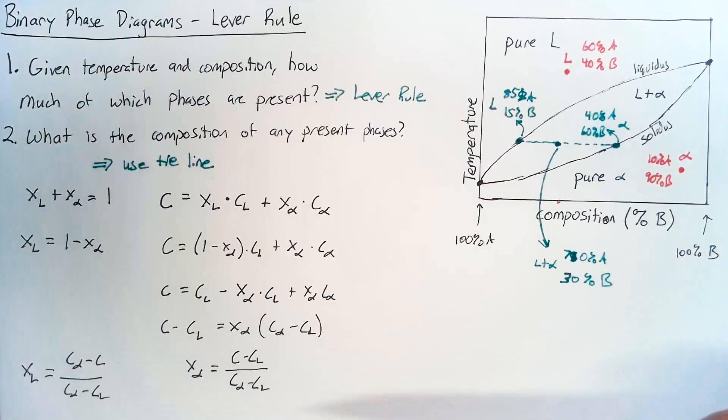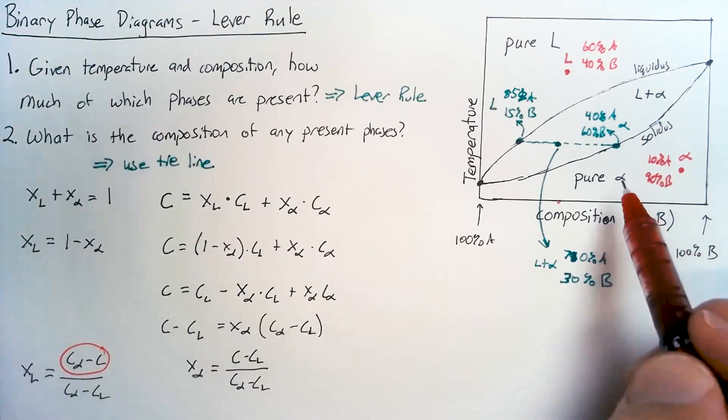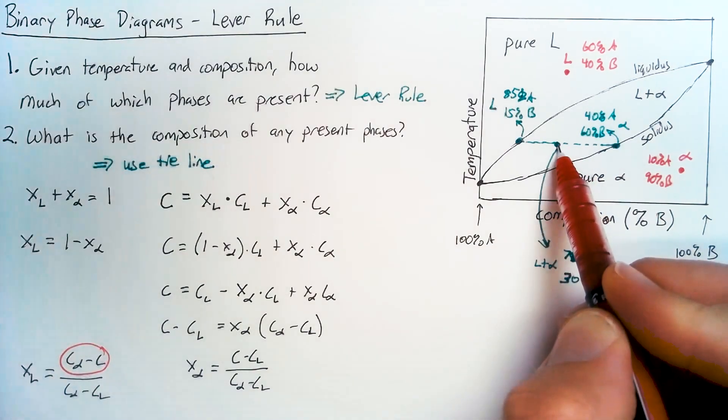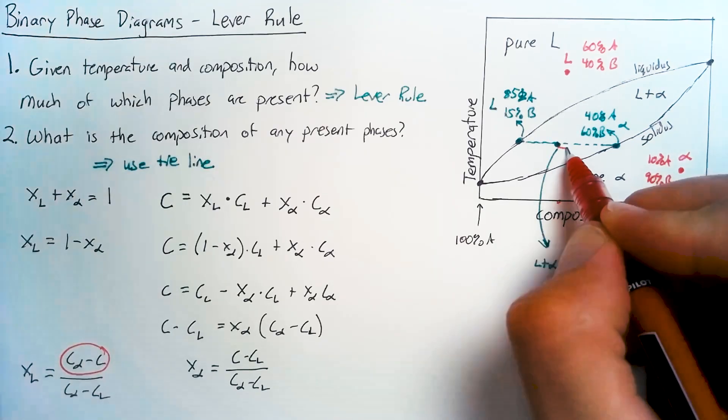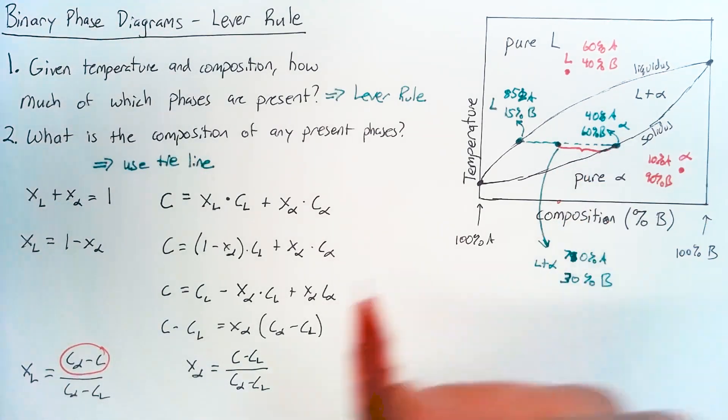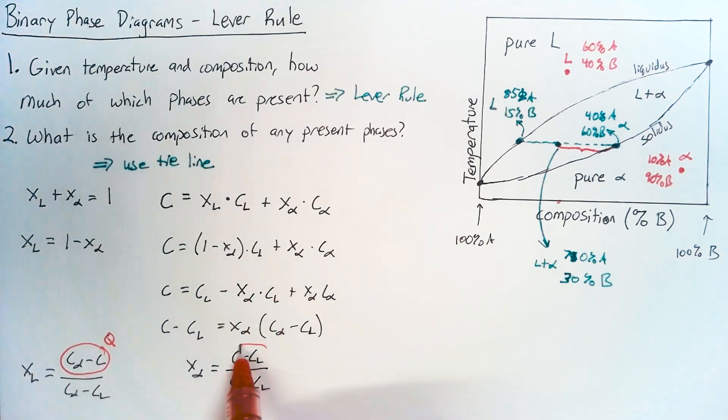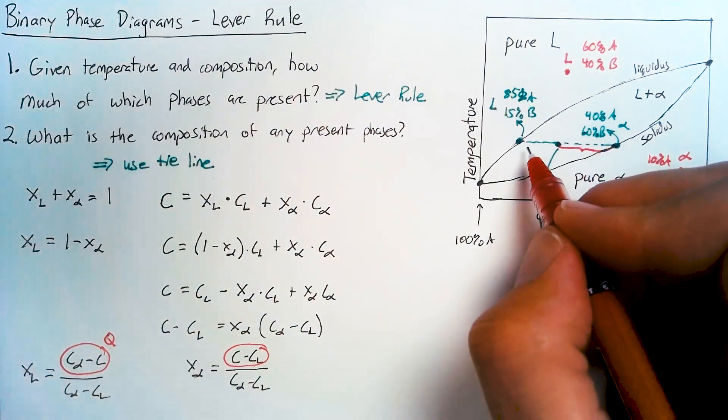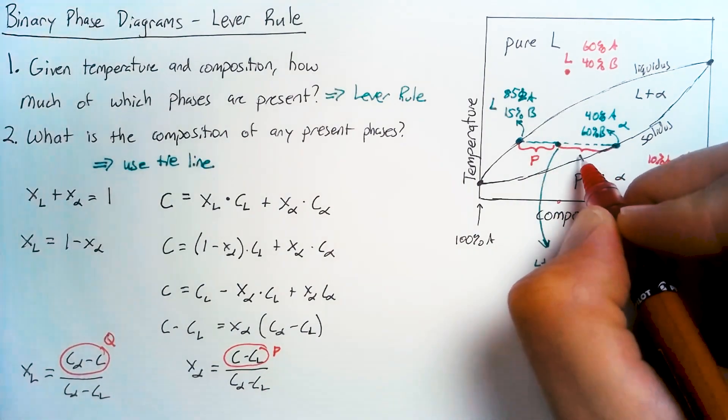All right. We can plug these numbers in, but there's one more step that we can take to make the implementation of this just a little bit easier. Let's take a look at this piece right here. This is C_alpha minus the overall composition. So if we kind of think of this as a distance between these two points, we can just give that another variable name. And we're going to give that name Q. For this one, that's the distance between these two points. And so this is going to be P. So this is P, this is Q.